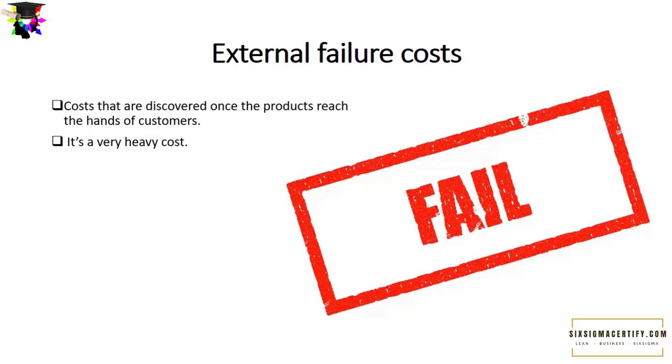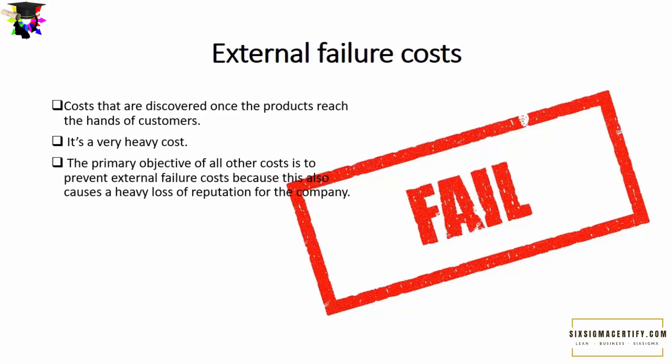If an organization incurs external failure costs, the entire product and service line may close, its reputation in the market may vanish, and the organization may go totally into doom. You must prevent any external failure cost. The primary objective of prevention cost, appraisal cost, and internal failure cost is to prevent external failure costs, because they cause heavy reputation loss to the company.